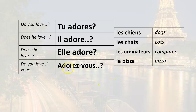And finally, do you love? — Adorez-vous? Do you love dogs? — Adorez-vous les chiens? Do you love cats? — Adorez-vous les chats? Do you love computers? — Adorez-vous les ordinateurs? Do you love pizza? — Adorez-vous la pizza?